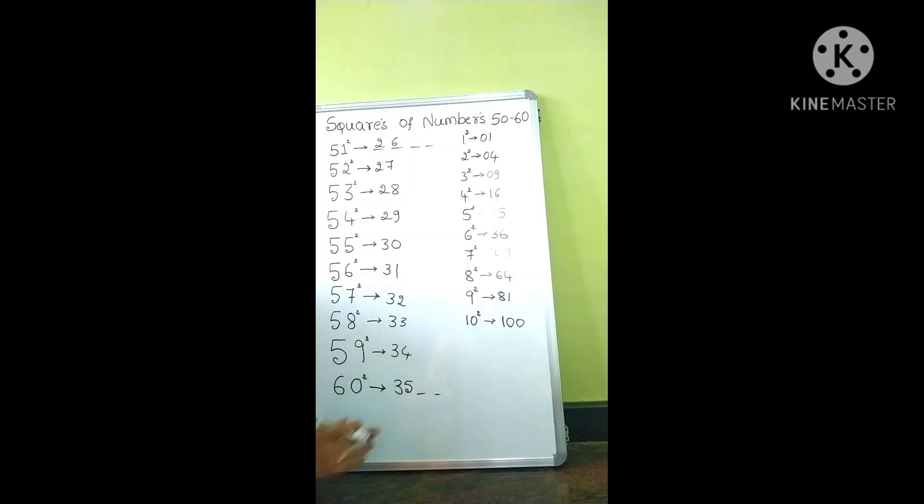So first two digits are 25 to 35. Next two digits are in order 1 to 10. We will add the squares here. So these square numbers are paired with our answers.